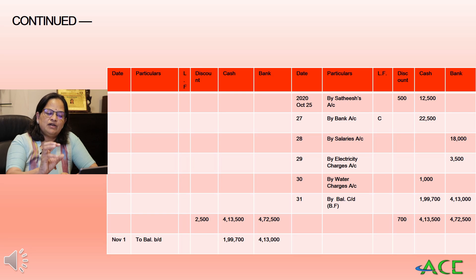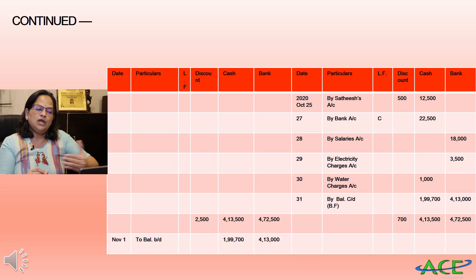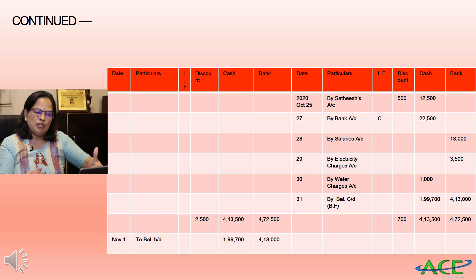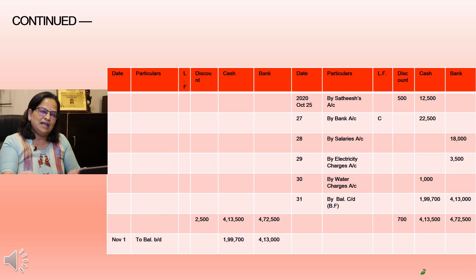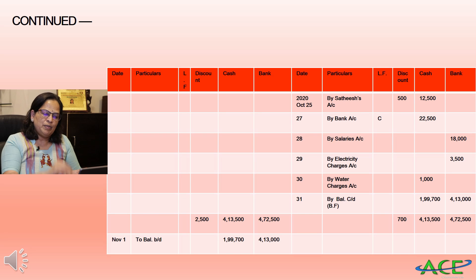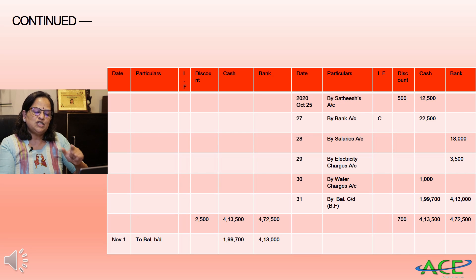We write the balancing figure in brackets for the account. The opening balance is then brought down for the next month — on November 1st, from the credit side we bring it to the debit side because the debit side was higher. So the closing cash balance is rupees 1,99,700 and the bank balance is rupees 4,13,000. This is the three column cash book explained with one problem.